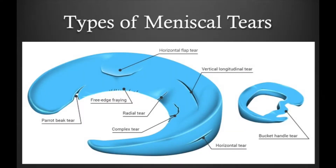There are a variety of meniscal tears. This is relevant because it is only vertical, longitudinal tears that are typically amenable to surgical repair. The other types of tears, including parrot beak tears, complex tears, horizontal tears, and radial tears, typically require removal rather than repair. There is also a bucket handle type tear, which depending on the duration of symptoms, can be either repaired or simply removed.